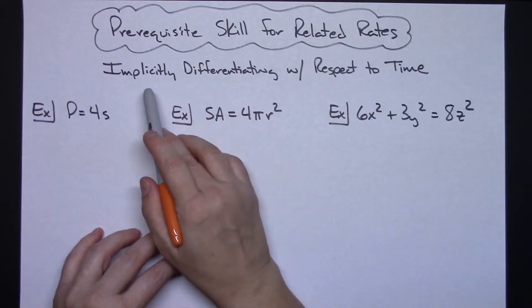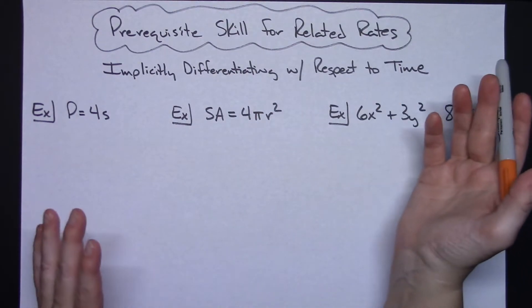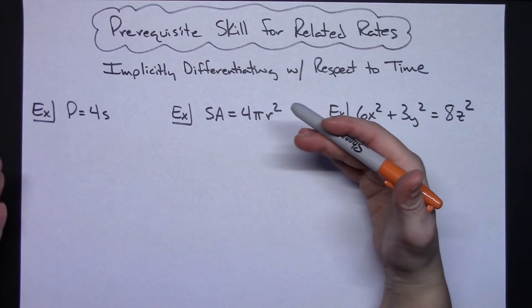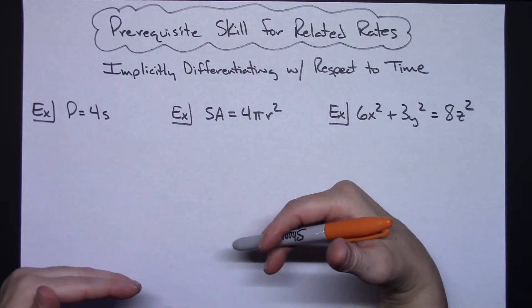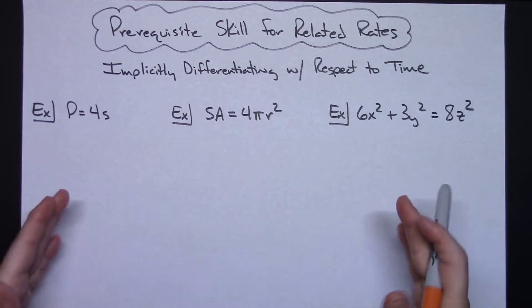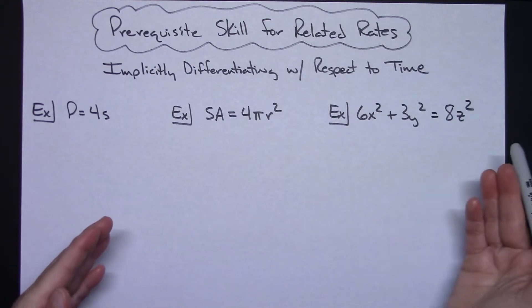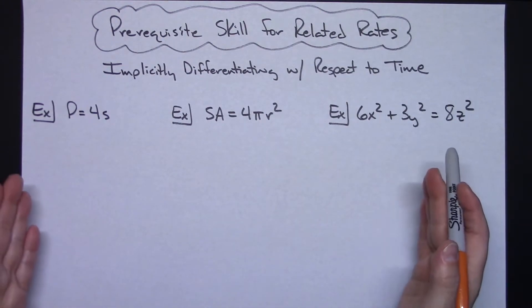And usually or typically these variables change values with respect to time. So being able to implicitly differentiate with respect to time is a crucial skill. It's the very first thing that you're going to have to be able to do in your related rates problems to be able to solve it. So this video focuses on implicitly differentiating with respect to time. I've got three examples here that we're going to take a look at.